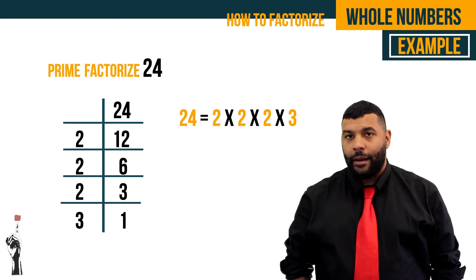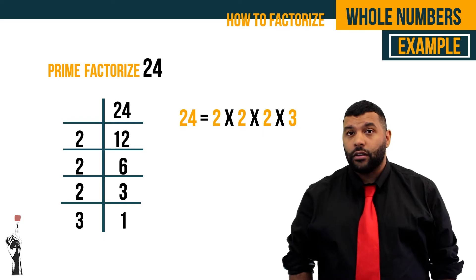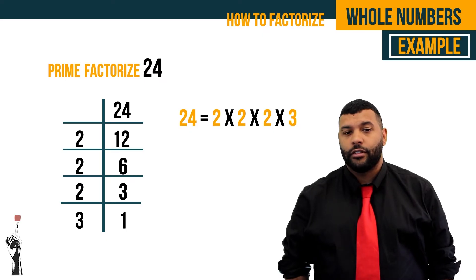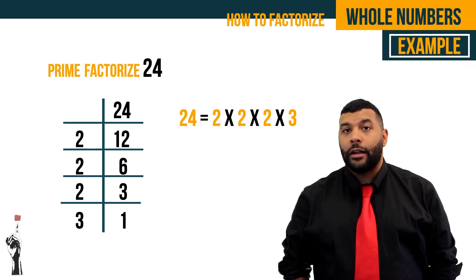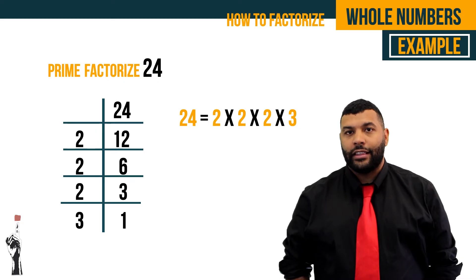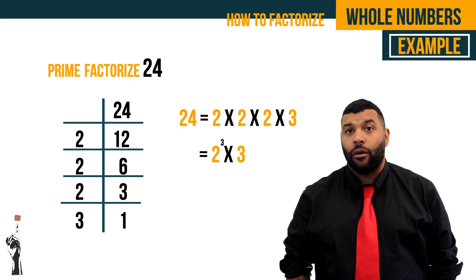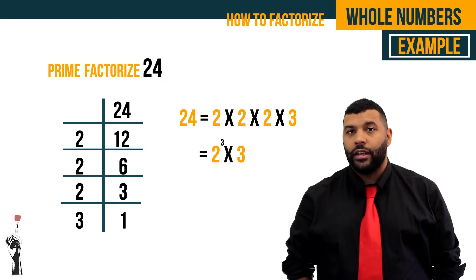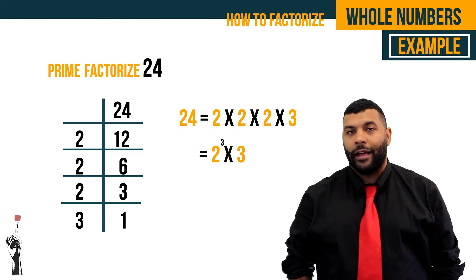Now when we have a number times itself, we can change what is called the exponent. The exponent is the number that tells us how many times it is multiplied by itself. So instead of saying 2 times 2 times 2, we can write this as 2 cubed or 2 to the power of 3. So in essence, 24 is equal to 2 to the power of 3 multiplied by 3.